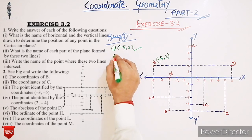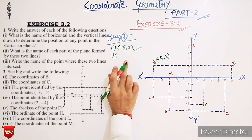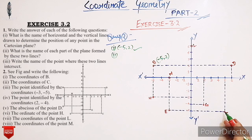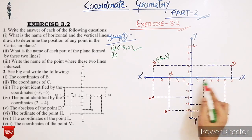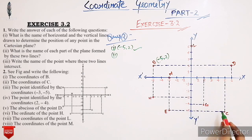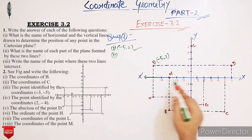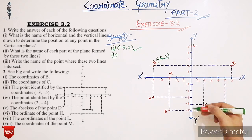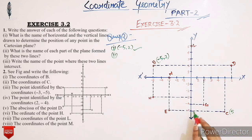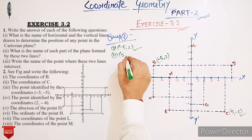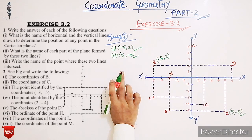The coordinates of point B are (-5, 2). Second, we have to find the coordinates of point C. The distance of point C from the y-axis is 5 units, and the distance from the x-axis is 5 units. Point C lies in the fourth quadrant, so the coordinates of point C are (5, -5).